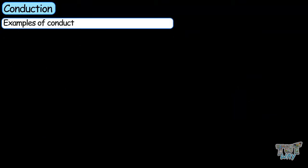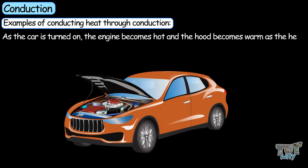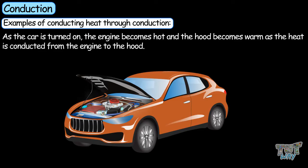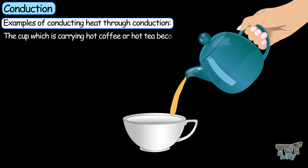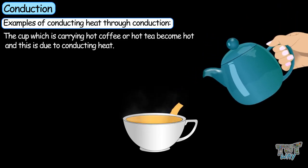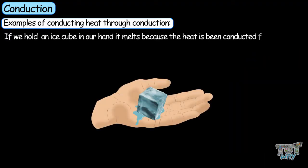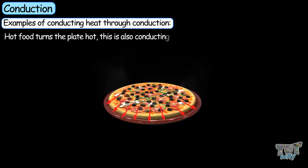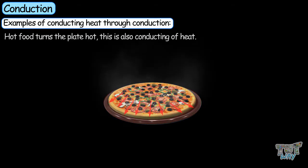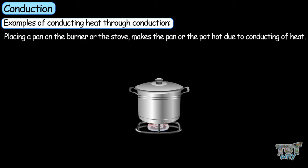Now let's have a look at some examples of heat transfer through conduction. When a car is turned on, the engine becomes hot and the hood becomes warm because the heat is conducted from the engine to the hood. A cup carrying hot coffee or tea becomes hot due to conduction. If we hold an ice cube in our hand, it melts because heat is conducted from our hand to the ice cube. Hot food turns the plate hot, and placing a pan on the burner makes the pan hot — both due to conduction.